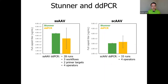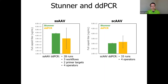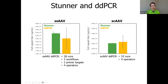Stunner's performance for genome titer stacks up really well against other analytical techniques. Here we have an example of method qualification against ddPCR for both single-stranded AAV and self-complementary AAV. On the left, across 28 runs evaluating three different workflows, two primer targets, and operator-to-operator variability, ddPCR showed large variability due to the large design space explored. Meanwhile, Stunner has a very precise genome titer answer that hits within the expected value. The customer then ran the optimized ddPCR process across 33 runs and four operators on a self-complementary AAV particle, and again Stunner's full capsid titer matched very nicely within the error of ddPCR.